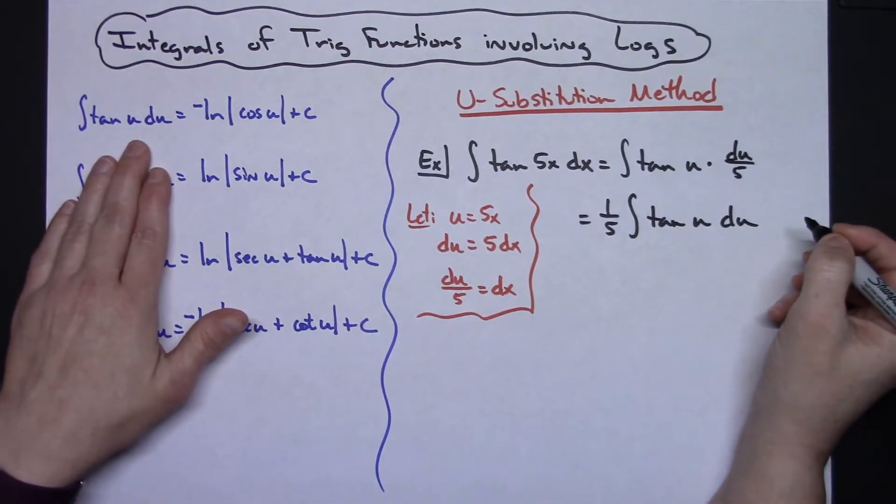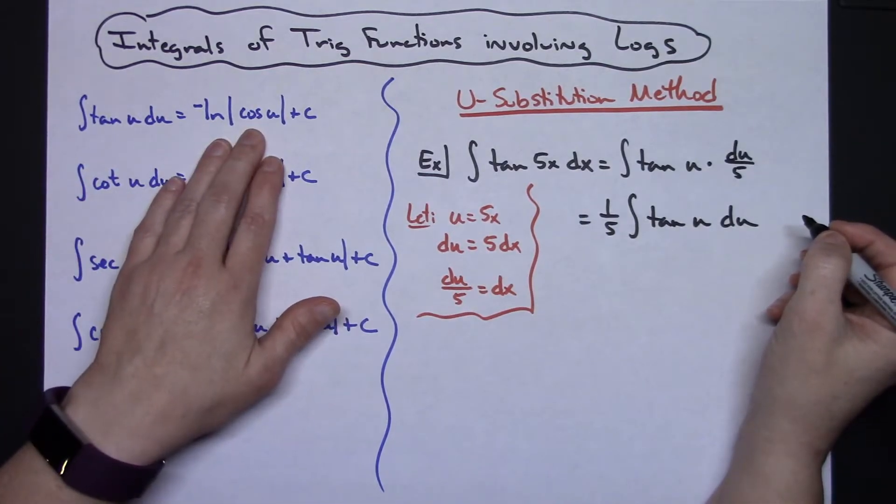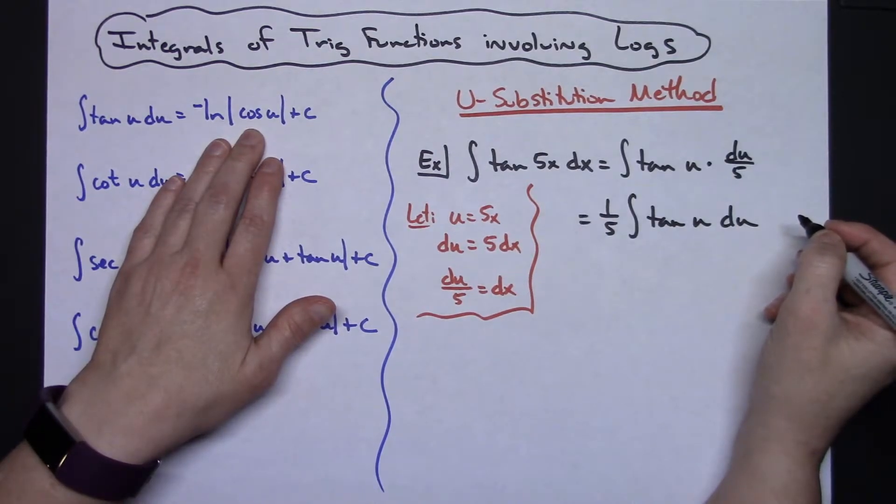Tangent u du is going to be the negative natural log absolute value cosine u plus c.